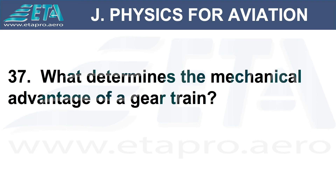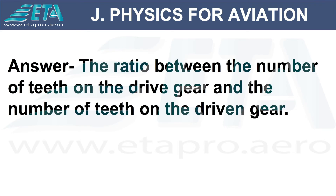What determines the mechanical advantage of a gear train? Answer: the ratio between the number of teeth on the drive gear and the number of teeth on the driven gear.